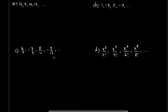We would like to find, for each of these four examples, a formula that will give us the nth term. In the first example, we have a sequence starting with 4, then 7, 10, 13. The difference between each pair of consecutive terms is always three.